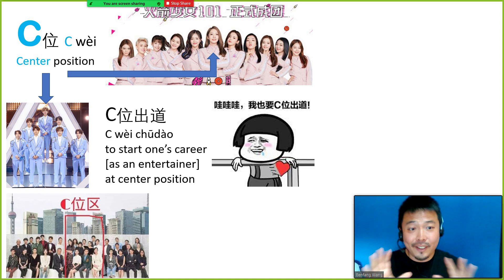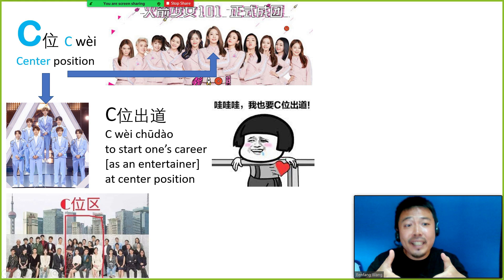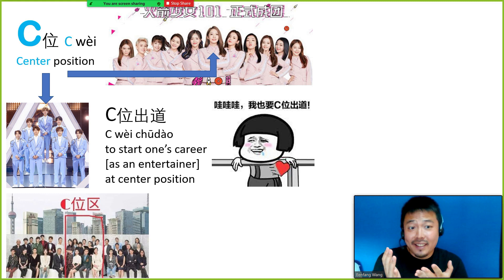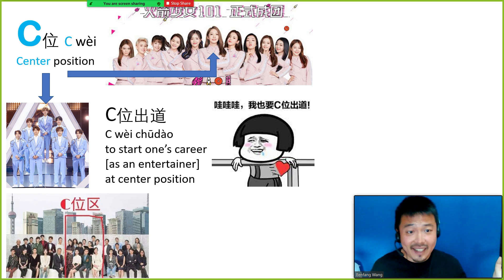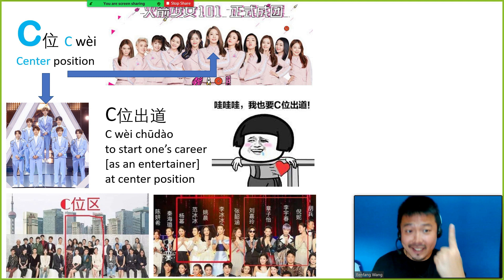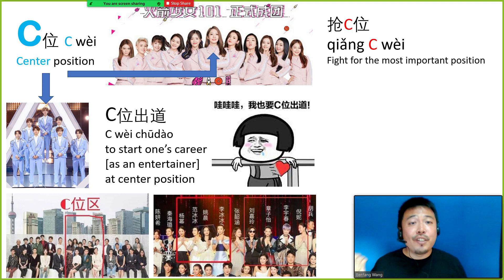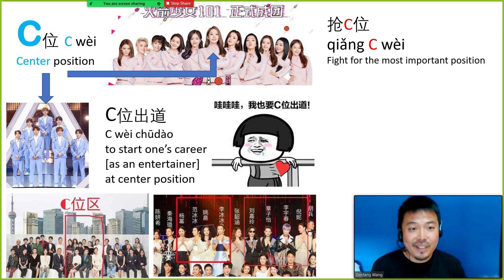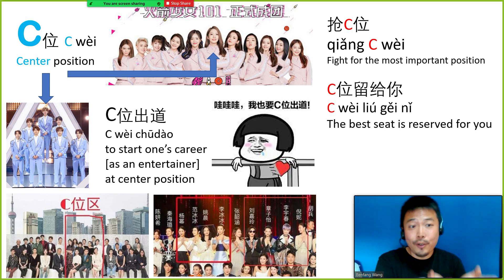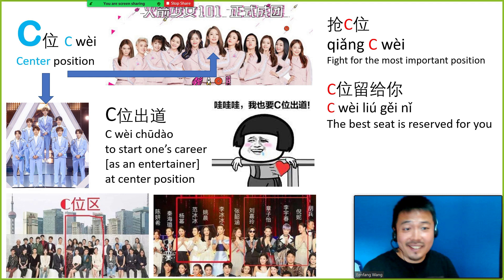Looking at the GIF: 我也要C位出道 — I also want to be the center of the group. In celebrity group photos, everyone is trying to enter C位区, the zone of the center position. Within C位区 there is the one C位, the most important center position. Whoever stands there is the most important figure. Everyone is trying to 抢C位, meaning to fight for the most important position. Or we say C位留给你 — the best seat is reserved for you.